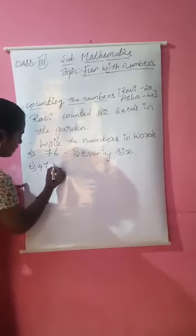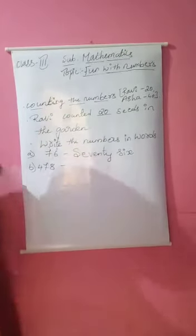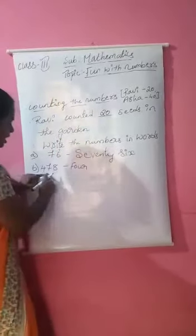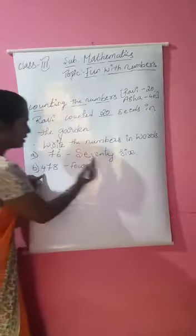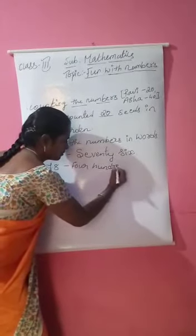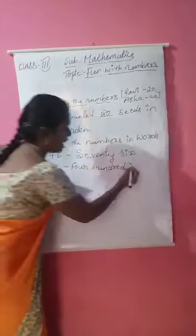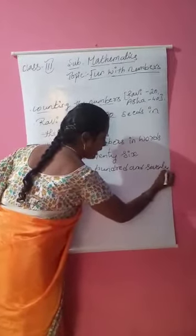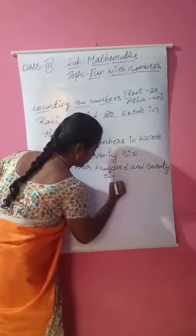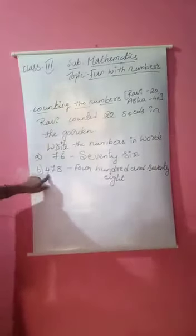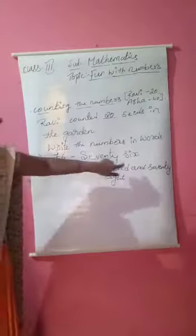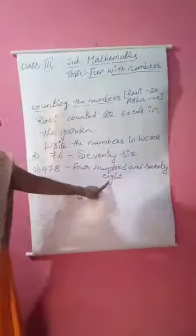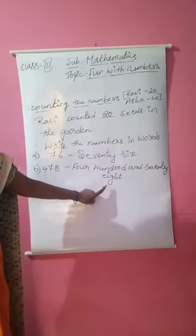Next example: four hundred and seventy-eight — how will we write it? Four is in the hundreds place, and seventy-eight — we will be writing like this. So four is in the hundreds place and seven is in the tens place, giving us seventy-eight. We will write it like this.